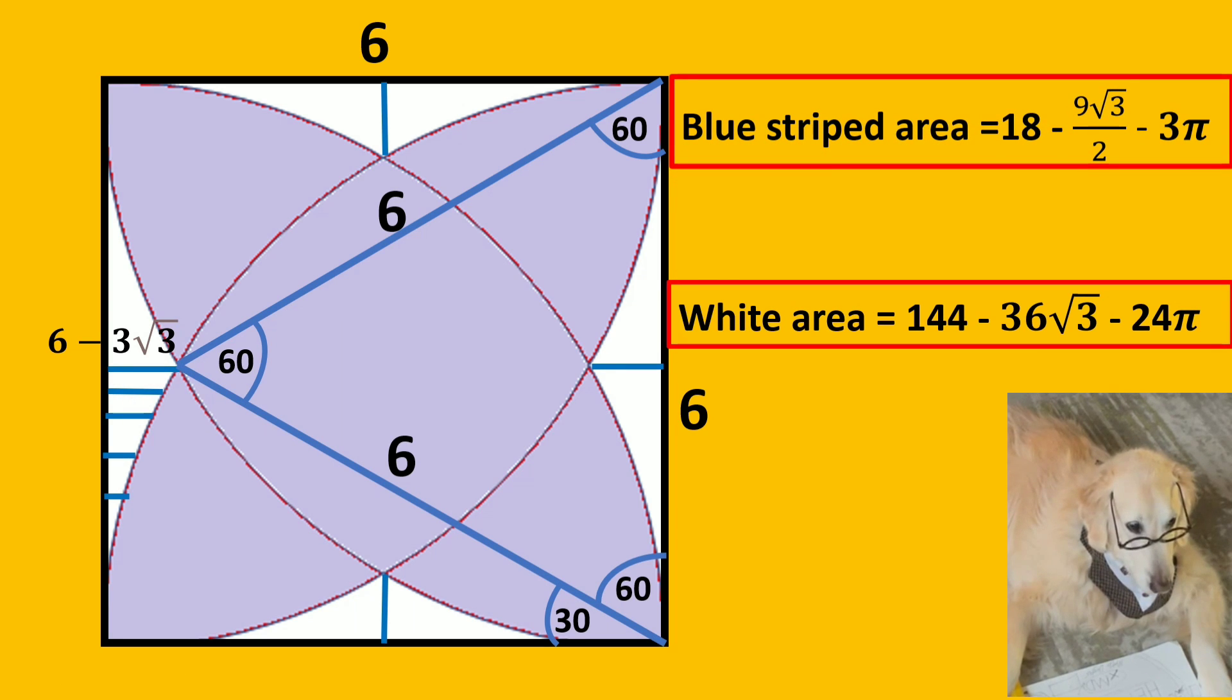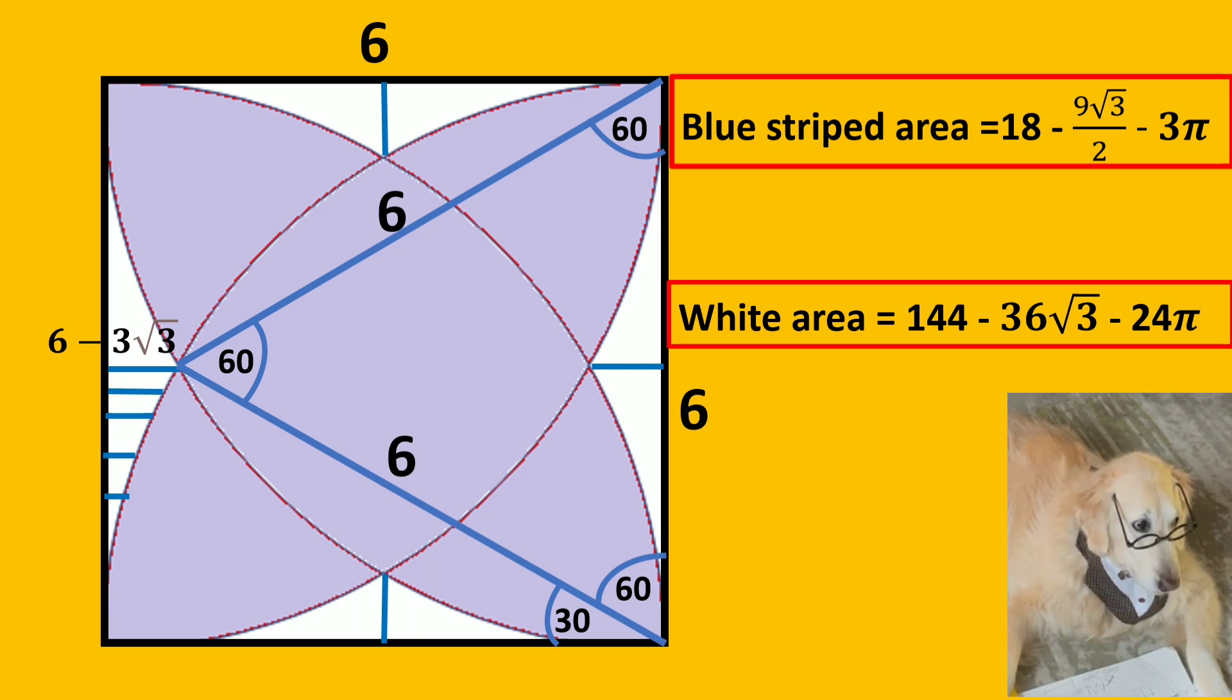As you can see, the white area is equal to sum of 8 blue striped areas. So we can calculate the white area by multiplying the area of blue striped area by 8.